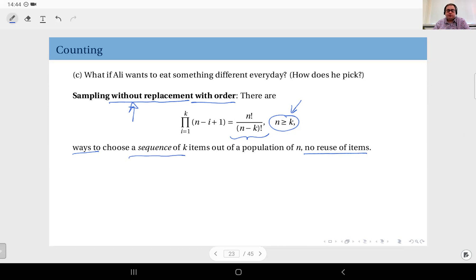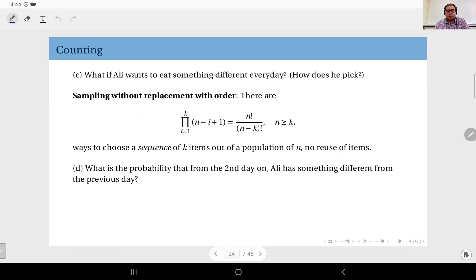So that's the condition where you can have sampling without replacement with order. Now a slightly different question here. This doesn't fit in either sampling with replacement with order or without replacement with order—it's a little bit different.